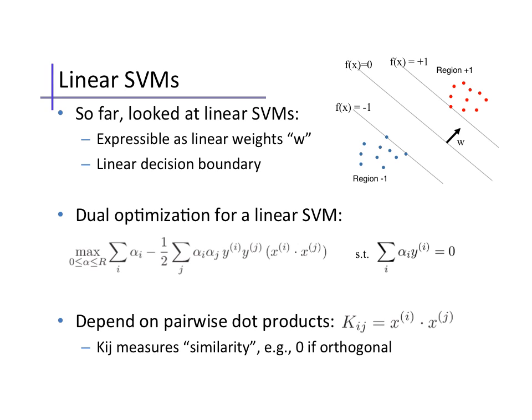Up until now, we've looked at linear SVMs, meaning that the classifier was effectively a simple perceptron. In other words, linear weights w on the input features, resulting in a linear decision boundary.